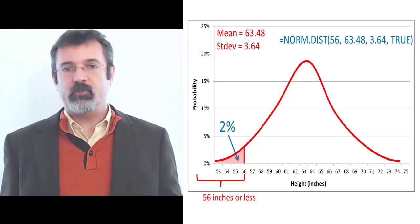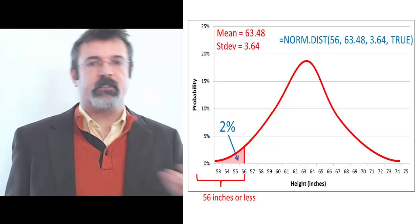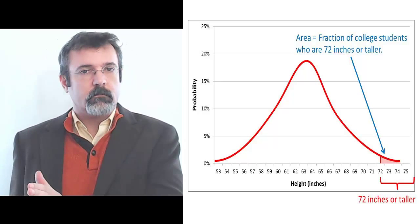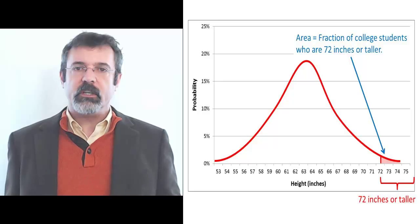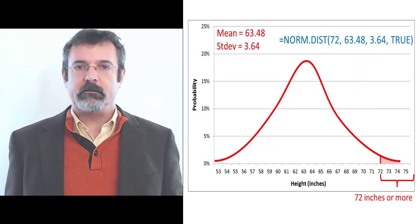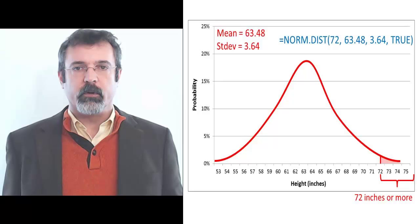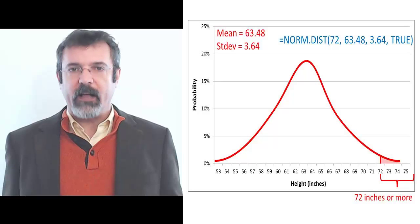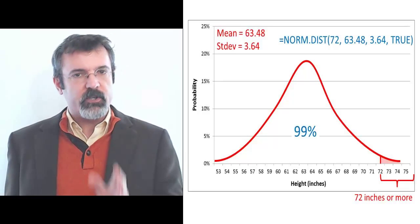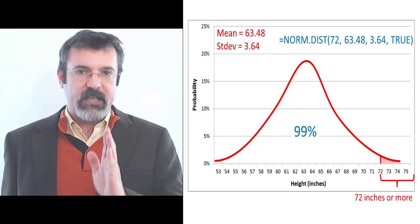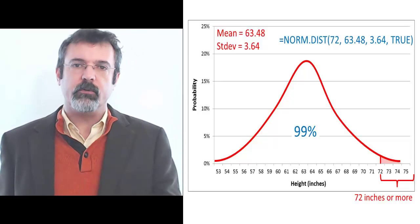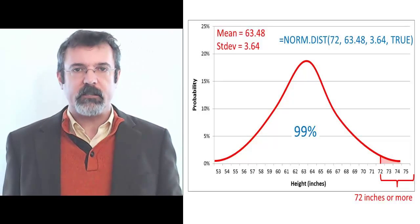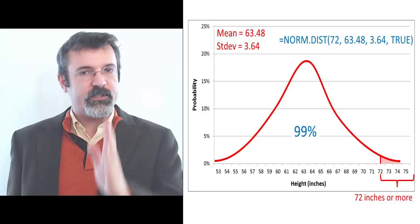Excel returns an area of 2%, so the area from the left up to 56 inches is 2%. To find the area from 72 inches and above, we use the NORM.DIST function and enter 72 as the height, 63.48 as the sample mean, 3.64 as the standard deviation, and TRUE. The function returns a value of 99%. Remember, the function returns the area from the left up to the value you're examining, so the area from the left up to 72 is 99%, meaning the area from 72 and above is 1%.